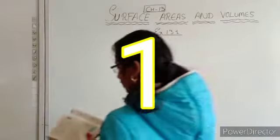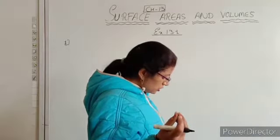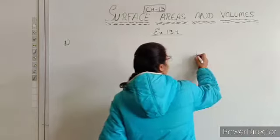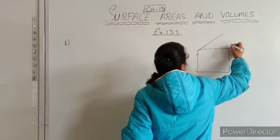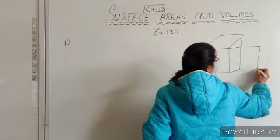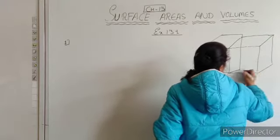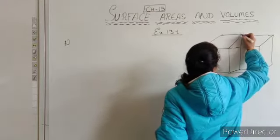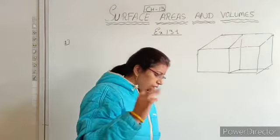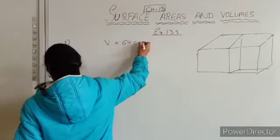The first question of exercise 13.1 is: two cubes, each of volume 64 cm³, are joined end to end. So let us make two cubes — here is one cube, and we join the second cube with it end to end. So we have the two cubes joined end to end. Volume of one cube is 64 cm³.